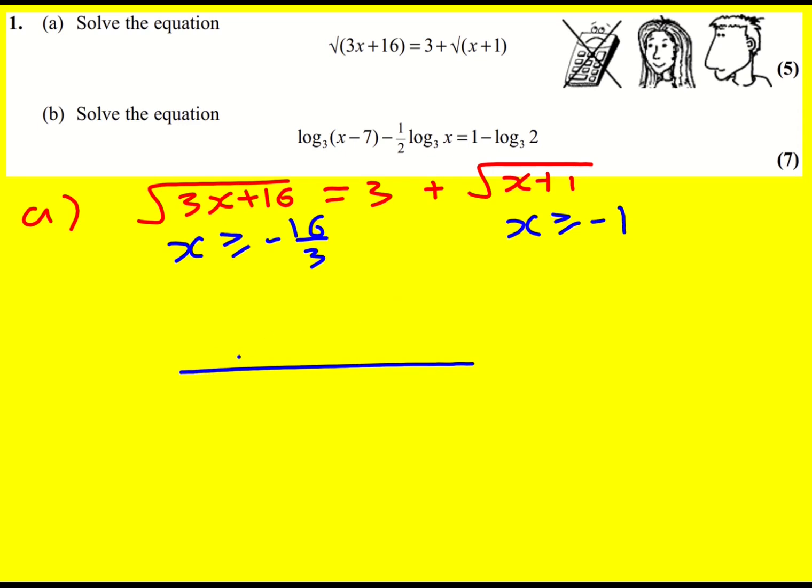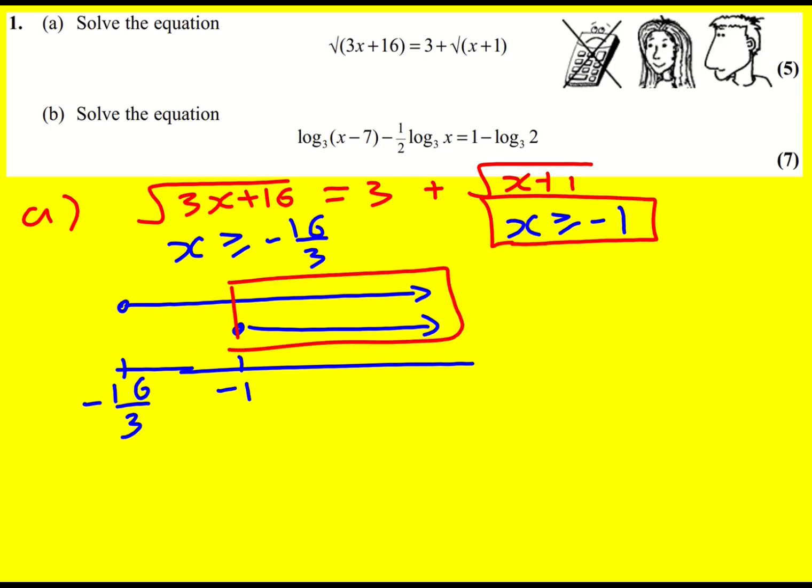If we were to just sketch these on a number line, say minus one, then we would get this going on, and then minus 16 over three would be over here because it's smaller. I'm interested in where both of these things are okay. So actually my overall solutions are going to be here. I need to have that x is bigger or equal to minus one.